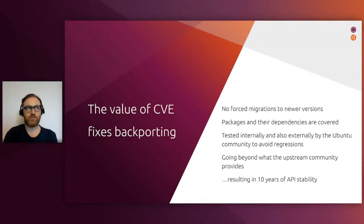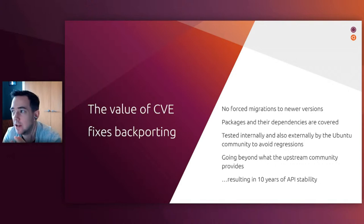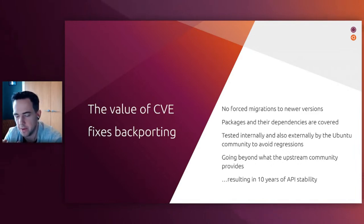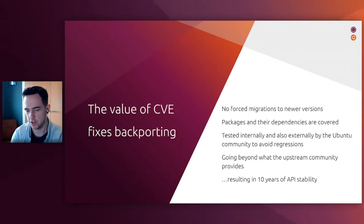Does that mean we maintain some applications' security longer than the actual upstream community maintains them? Yes — supporting things, particularly for 10 years, is a very challenging thing to do, and something a lot of open source maintainers don't want to do. Often upstream products will be supported for two, three, maybe five years. So when we support those for 10 years, we will support them beyond what the upstream can do. When we make a commitment to support something for 10 years, that's something you can rely on because it's something we've been doing for a very long time. We do build on top of the open source community, but we're often adding value you wouldn't get by consuming directly from upstream, and this extra lifetime is one of the big important areas of that.